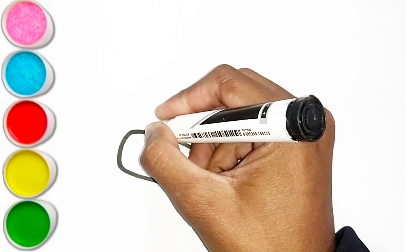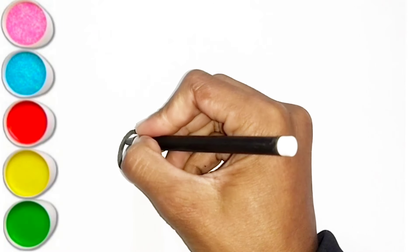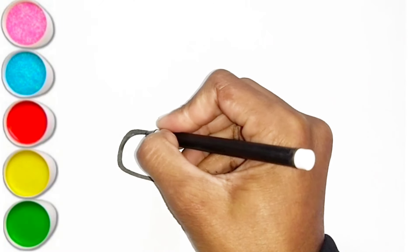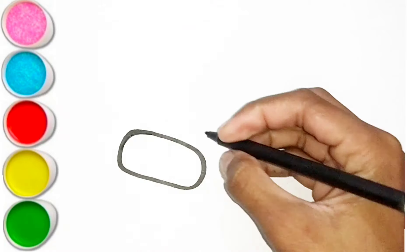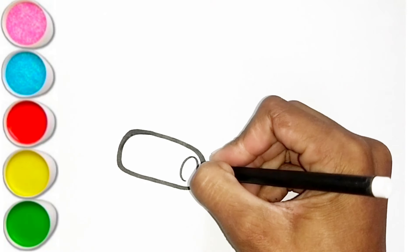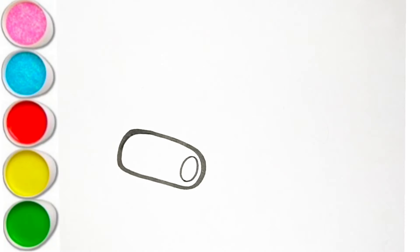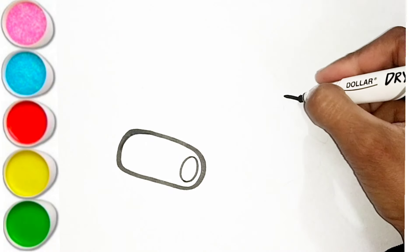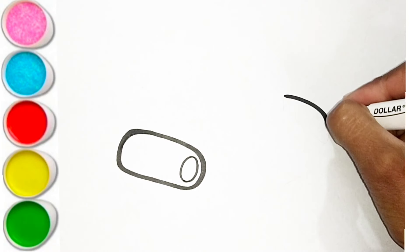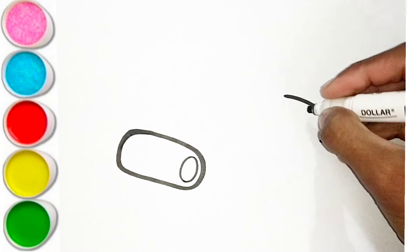A is for Apple, A-A-Apple. B is for Ball, B-B-Ball. C is for Cat, C-C-Cat. D is for Doll, D-D-Doll.